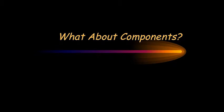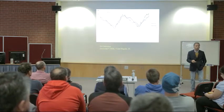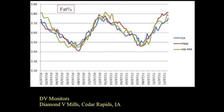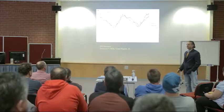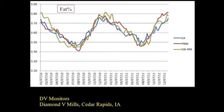Let's look at components. Most of you get paid for fat and protein. This is a graph of fat percent in three regions of the U.S. over a two-year time period — winter time, summer time, winter time, summer time. Does that seasonal change in fat happen in Australia? Pretty much happens everywhere. The three lines represent California, the Pacific Northwest, and the Southwest Rocky Mountain states. California is extremely hot in the summertime, the Pacific Northwest is very cool, and the green line is somewhere in between. Do you think heat stress has anything to do with the drop in fat percent?